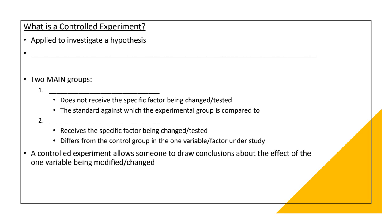So, I told you about a controlled experiment. But what exactly is a controlled experiment? Well, we use it to investigate a hypothesis. Now, in a controlled experiment, one variable, one factor or variable is modified or changed while all other factors are held constant.